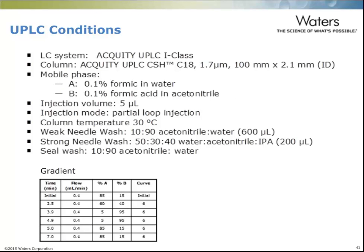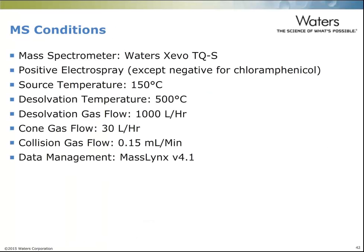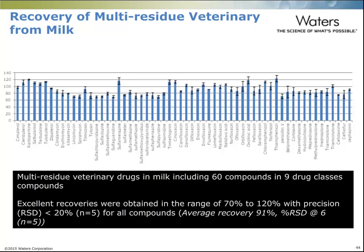For UPLC conditions, the I-Class system was used with a UPLC CSH C18 column, and formic acid was used in both mobile phase A and B. The mass spectrometer used was the Waters Xevo TQ-S. All compounds used electrospray positive ionization except chloramphenicol, which used negative mode.